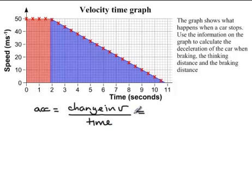So if I look at the graph, the change in velocity—well, it ends up at 0, so it's going to be 0 take away the velocity it started at. It started up here at 50 meters per second.